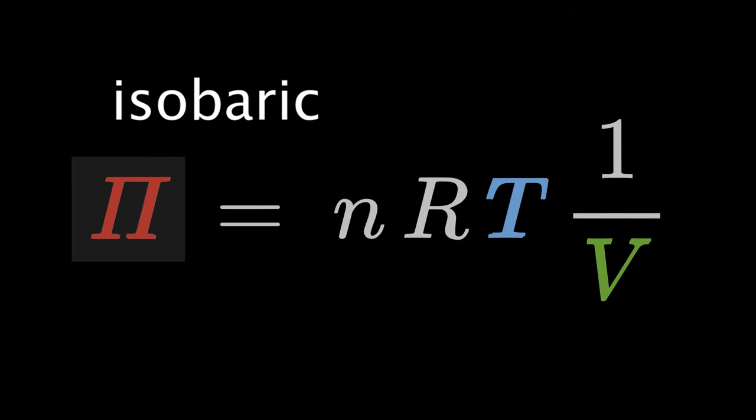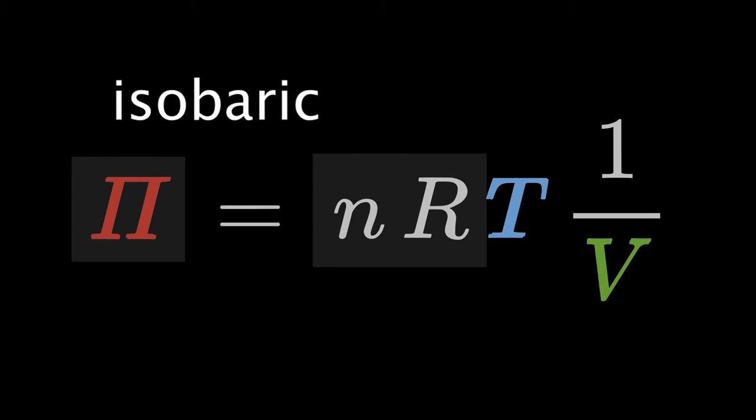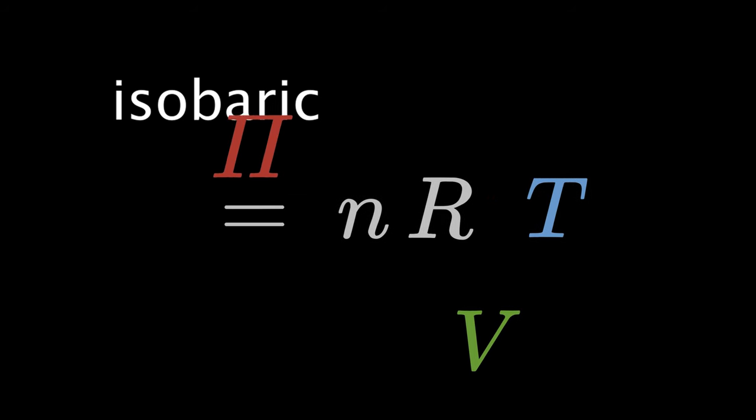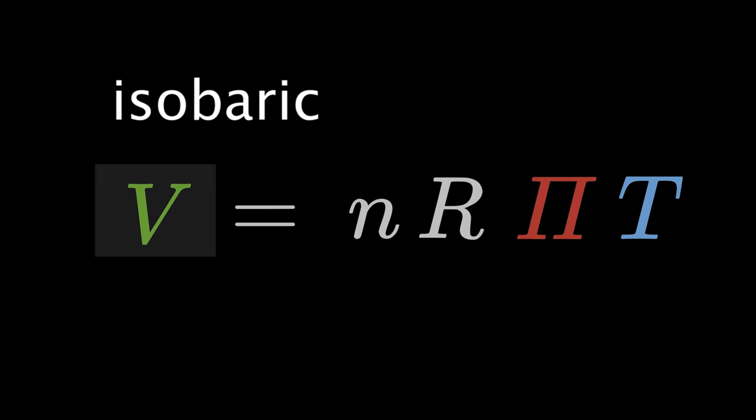In the case of an isobaric process, the pressure of the gas remains constant. This means that pi, n, and r are pure constants in the gas law, and the volume V is proportional to the temperature T.